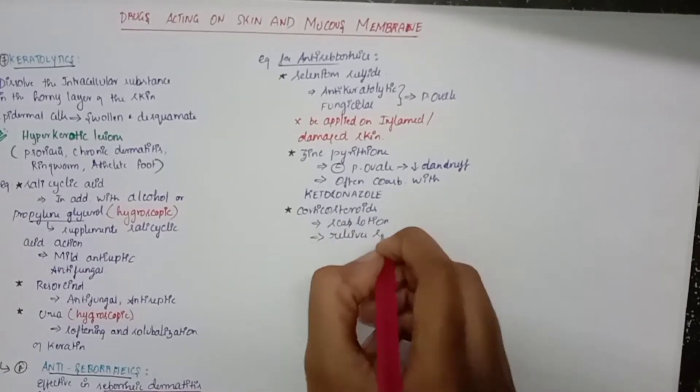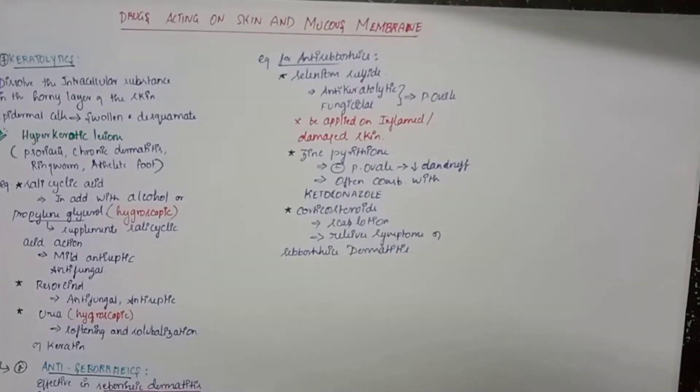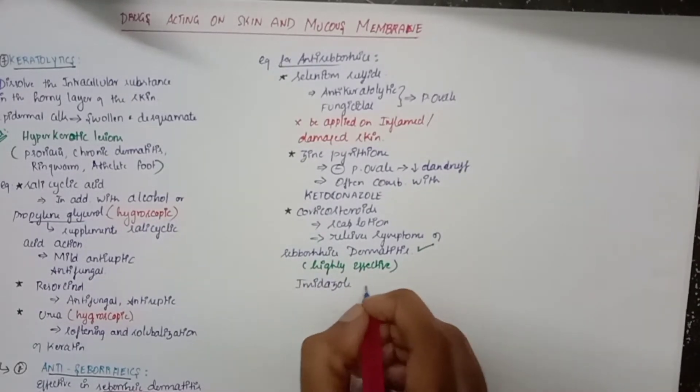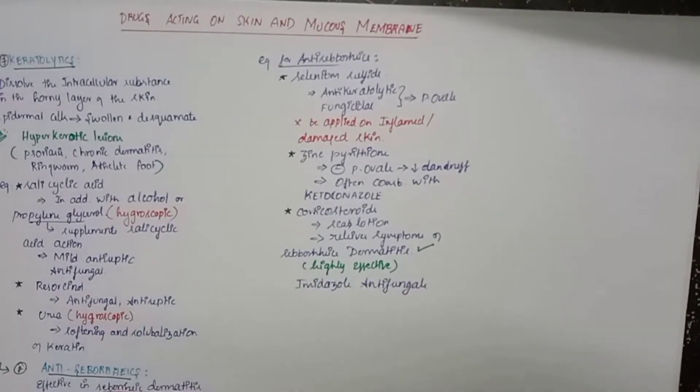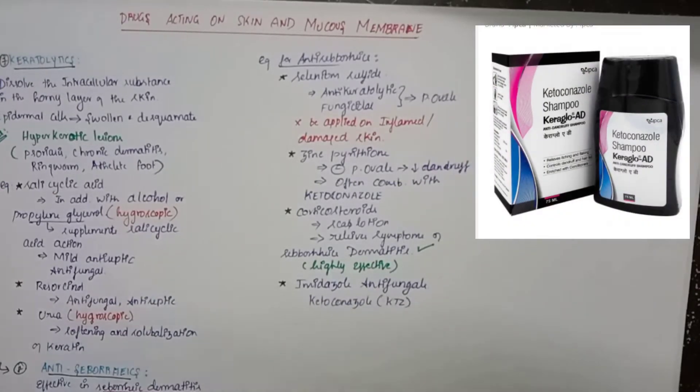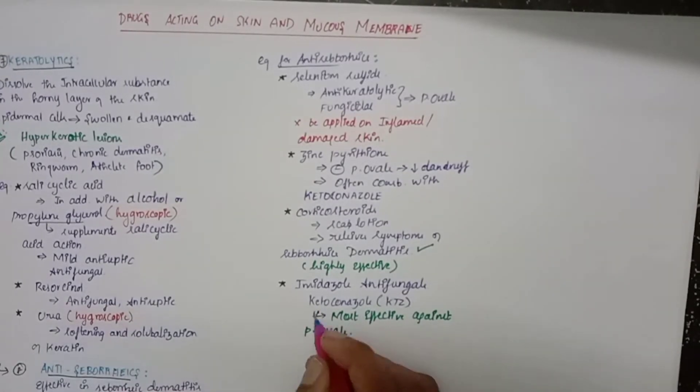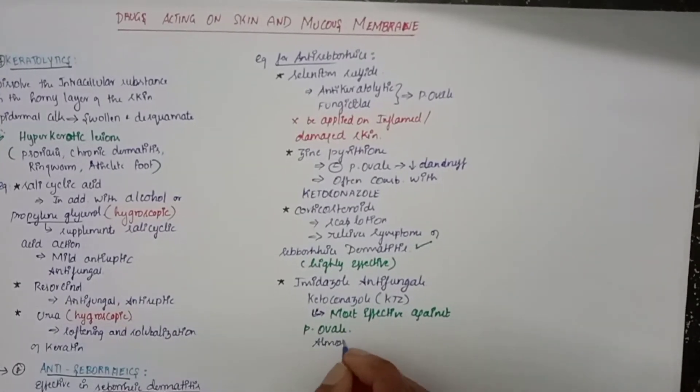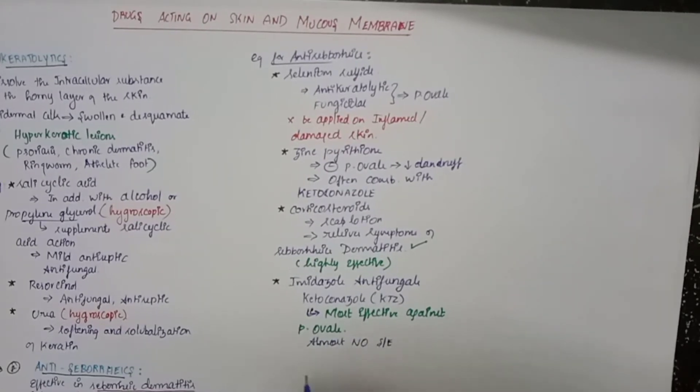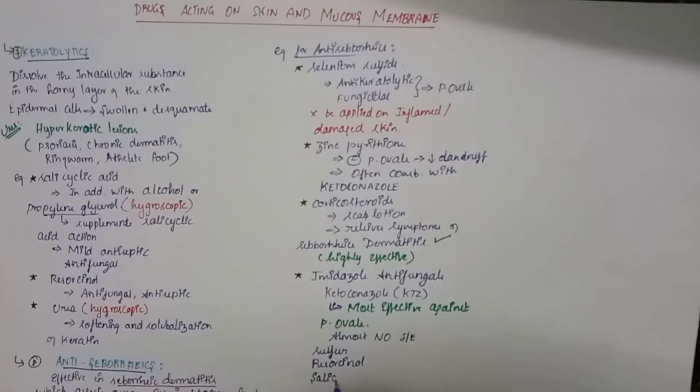And the next drug is corticosteroid. The corticosteroids are used as a scalp lotion and relieve the symptoms of seboric dermatitis. It is highly effective in treating seboric dermatitis. The next drug is imidazole antifungals, also an example of antiseporics. The main drug is ketoconazole, which is most effective against p-ovale, that pterosporum ovale, the yeast I mentioned earlier. Almost no side effects are present.